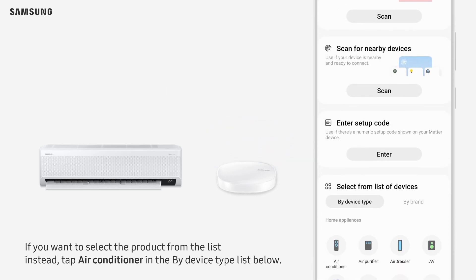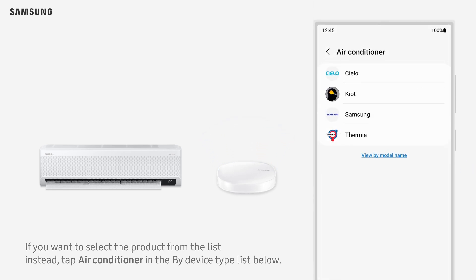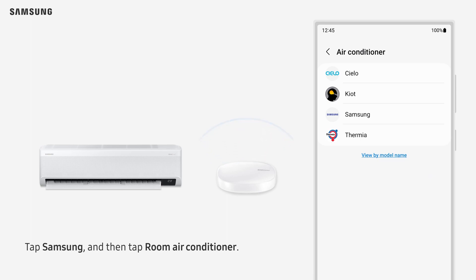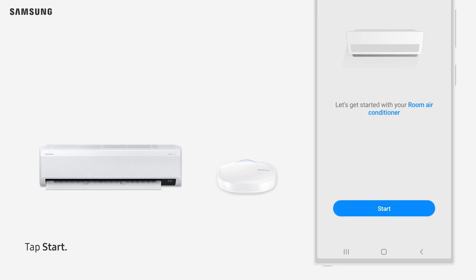If you want to select the product from the list instead, tap Air Conditioner in the By Device Type list below. Tap Samsung, and then tap Room Air Conditioner. Tap Start.